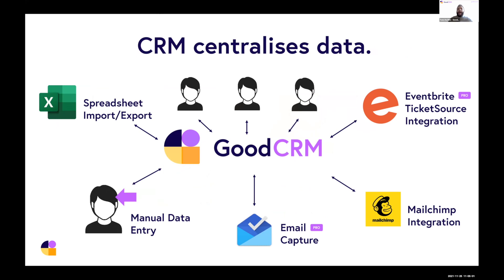We can fix it. A CRM centralises this data and makes it available to people in your organisation as a single source of truth with all of the latest information in one place. A good CRM can capture information from a variety of sources — we can import spreadsheets, upload files, add things we carry around in our heads, and we can capture various things automatically from inboxes, software, donations, events, and that kind of thing.